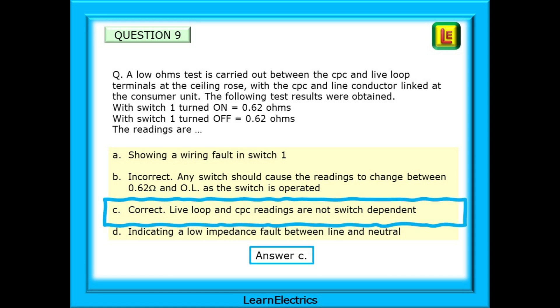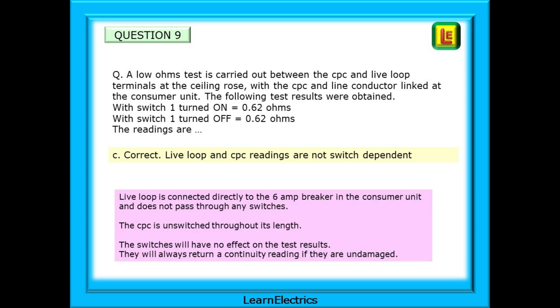The correct answer is C. The live loop and CPC readings are not switch dependent. Live loop is connected directly to the six amp breaker in the consumer unit and does not pass through any switches. And the CPC is unswitched throughout its length. The two conductors are connected by a link at the consumer unit. The switches will therefore have no effect on the test results. This test will always return a continuity reading if the conductors are undamaged.